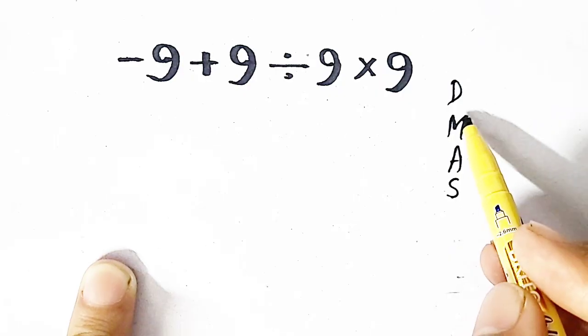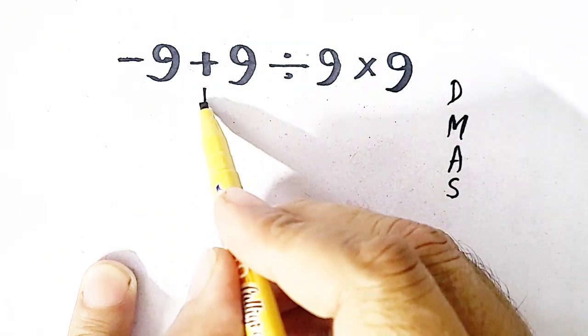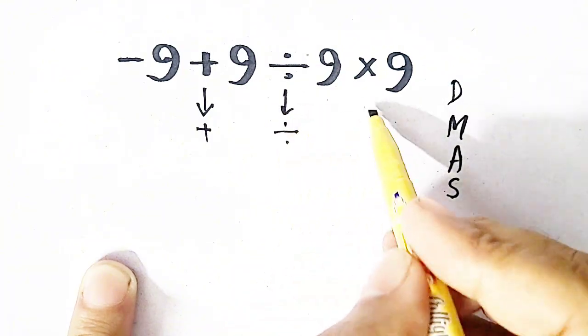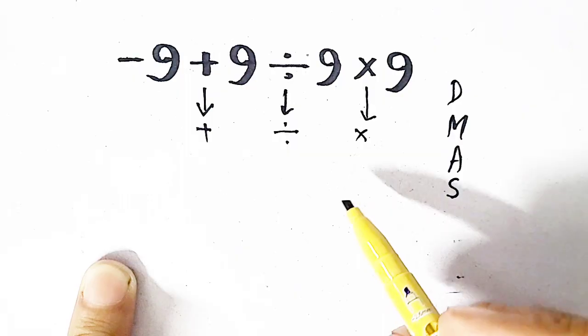So first of all, here is plus sign, and second is the division, and third one is multiplication.